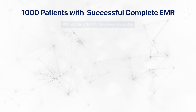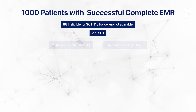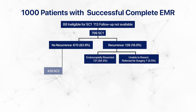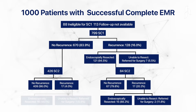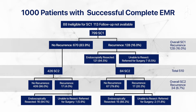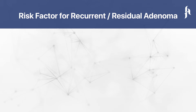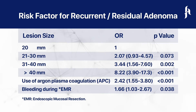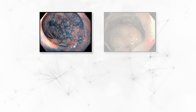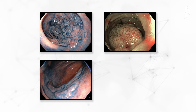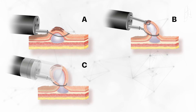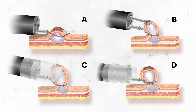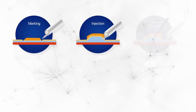If the polyp is removed in multiple pieces, it is expected to recur more, and when the polyp recurs, the second procedure for removal is harder and associated with higher rates of complications. So the endoscopic method which allows for single-piece excision should be preferred, depending on the size, shape, and cancerous potential of the polyp.